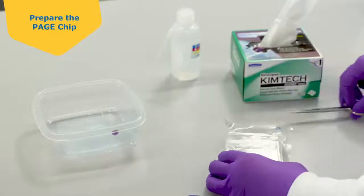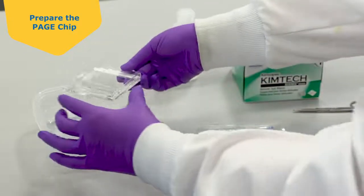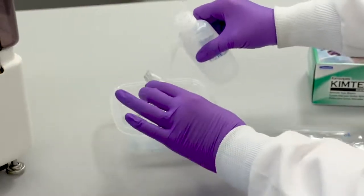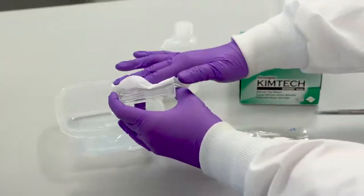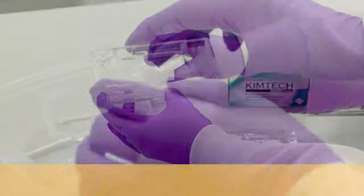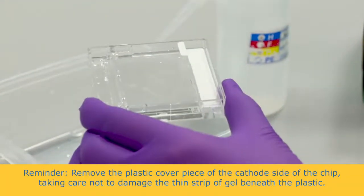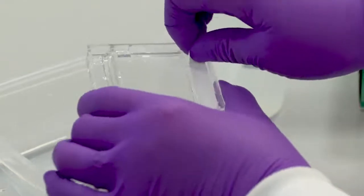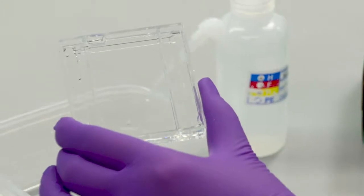Remove the PAGE chip from packaging, rinse with DI water, and dry the outside with a Kimwipe. Remove the plastic cover piece on the cathode side of the chip, taking care not to damage the thin strip of gel beneath the plastic. Then slowly remove the white tape on the anode side of the chip. If the PAGE chip has not equilibrated to room temperature, the white tape may tear during removal.